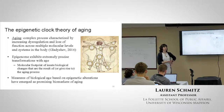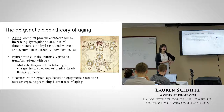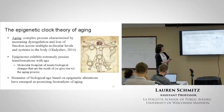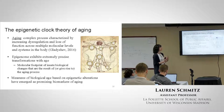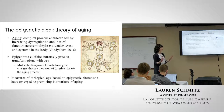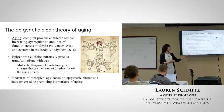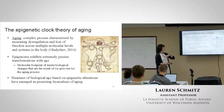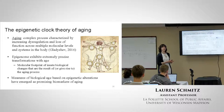Enter the epigenetic clock theory of aging. Aging is a complex process characterized by increasing dysregulation and loss of function across multiple molecular levels and systems in the body. What's been shown is that the epigenome actually exhibits really precise transformations with age - there does seem to be this molecular footprint on the methylome of innate biological changes that are the result of or are giving rise to the aging process. Because of this, measures of biological age based on epigenetic alterations have really emerged in the past six years or so as promising biomarkers of aging.